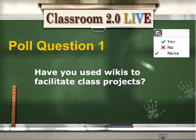We have poll questions — just a reminder that the option for voting is under your name on the far right. We have yes/no responses today. Click on the arrow and the icon to get the drop-down menu and give us an answer to our first poll question: have you used wikis to facilitate class projects? Green check for yes, red X for no.